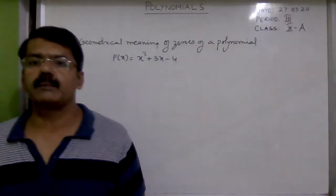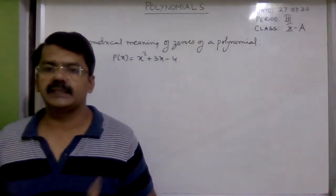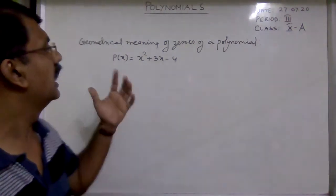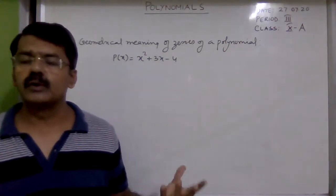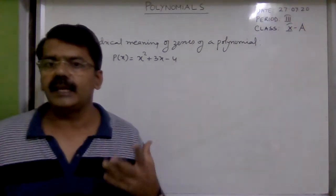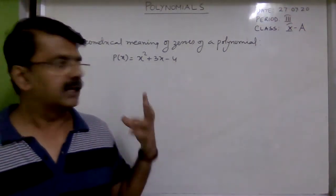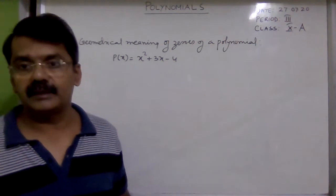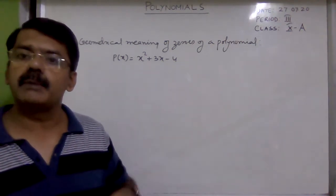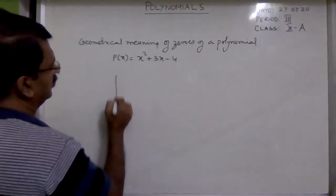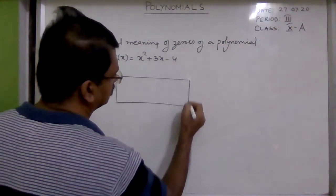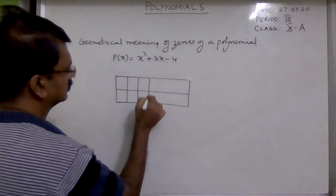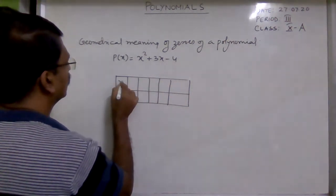I will give you one more example. Suppose p(x) = x² + 3x − 4. You can see it is a quadratic polynomial, so it must have two zeros — we have already found those zeros. Now I will explain the geometrical meaning of the zeros of a quadratic polynomial. Once again, if we want to plot this polynomial on a graph paper, for various values of x the p(x) will be plotted on the y-axis. First, make a table of x and p(x).